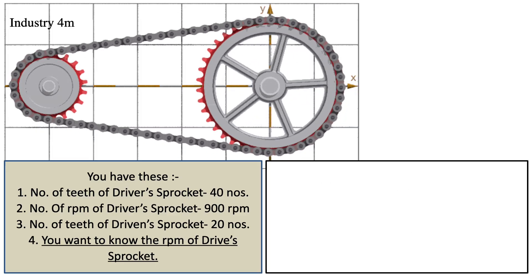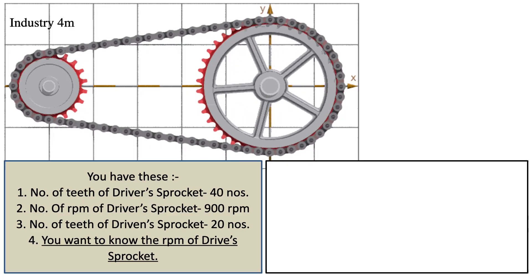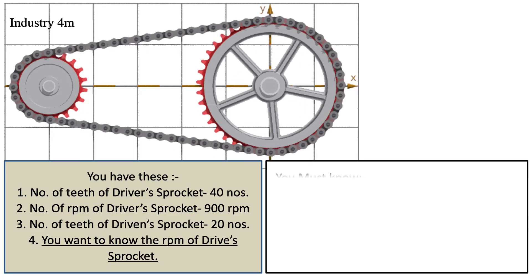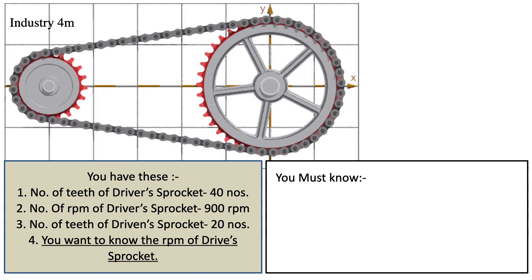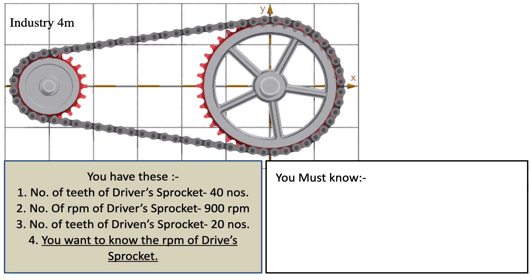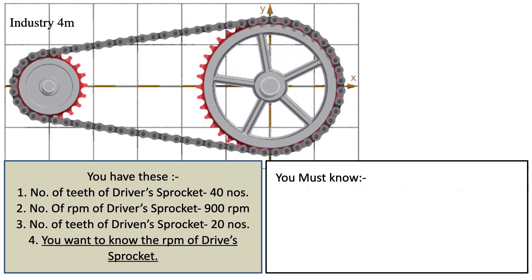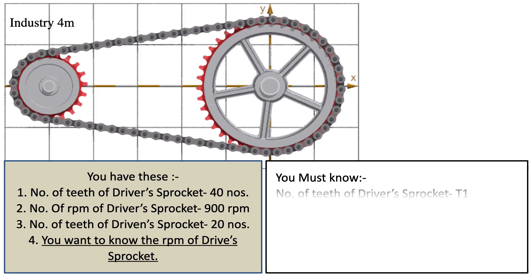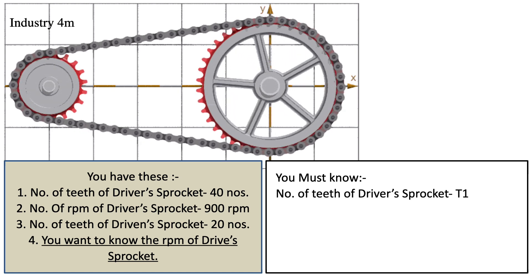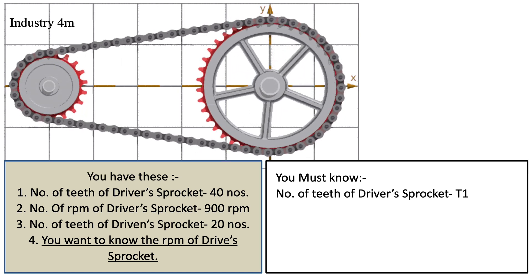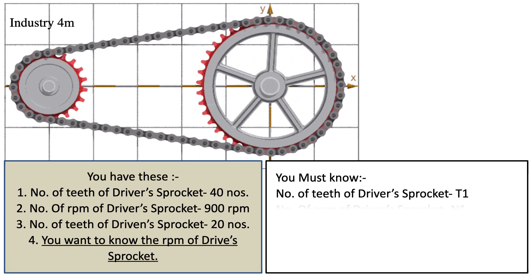Let us form the formula. The number of teeth of the driver's sprocket is called T1, the RPM of the driver's sprocket is called N1, the number of teeth of the driven sprocket is called T2, and now we are ready to calculate the RPM of the driven sprocket, called N2.